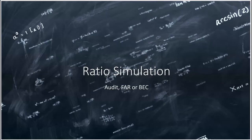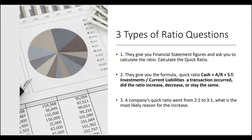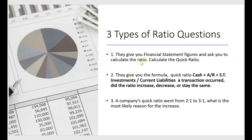Here's a ratio simulation that you could see on Audit, FAR, or BEC. There are three different types of ratio questions. In the first type, the exam gives you the financial statements and asks you to calculate the ratio — for example, given the balance sheet and income statement, calculate the quick ratio. For that type, you need to have the ratio memorized: the most liquid current assets — cash, receivables, and short-term investments — divided by all current liabilities.